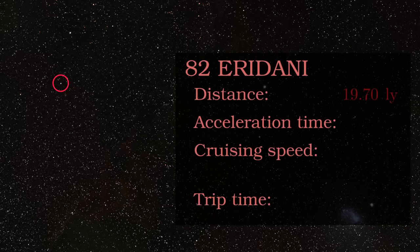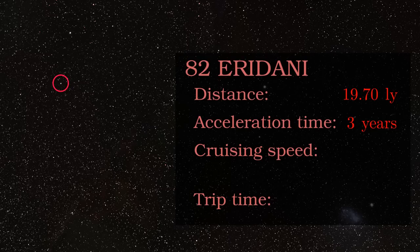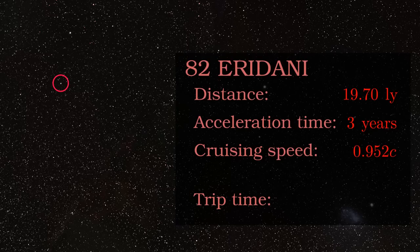What about somewhere further away, like the 82 Eridani system? It's 20 light years away, meaning that even at the speed of light, the trip would take 20 years. For this journey, I would recommend an acceleration time of 3 years to reach 95% of the speed of light. At this speed, time passes over 3 times slower for the spaceship relative to the Earth.